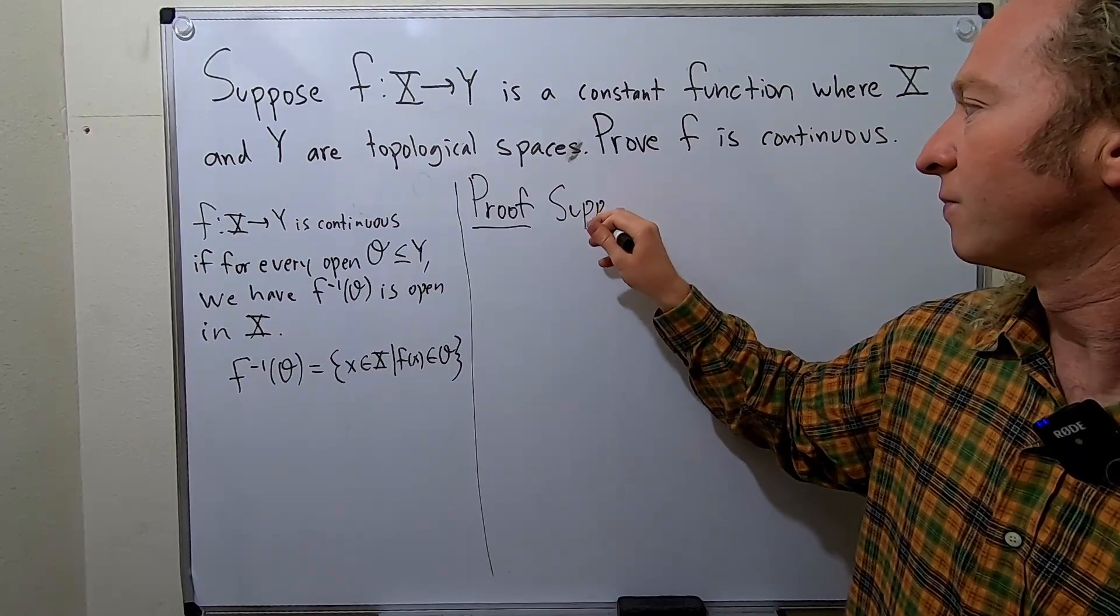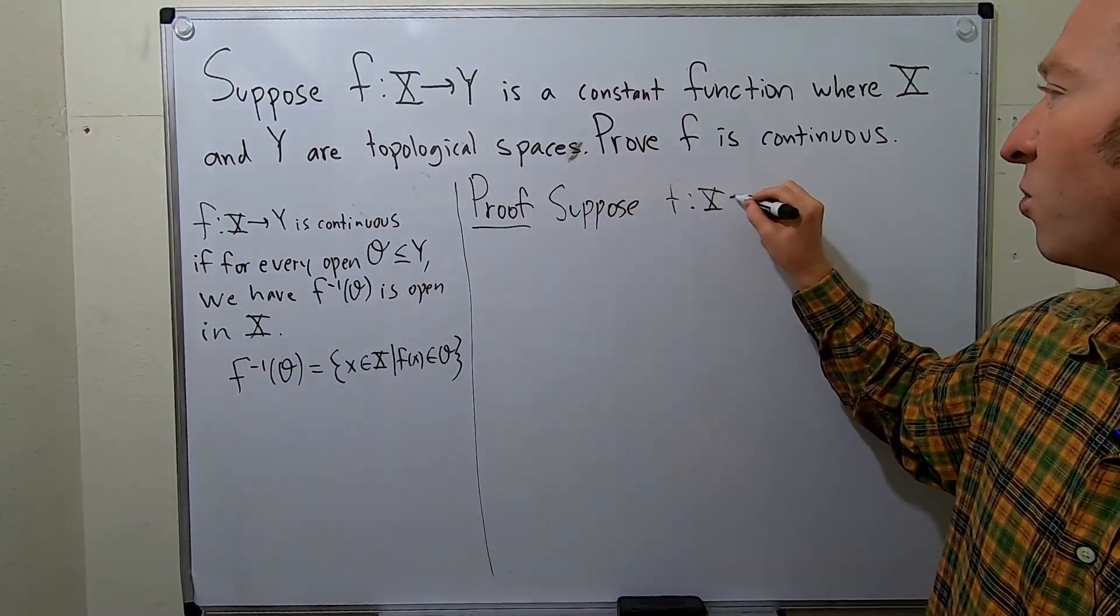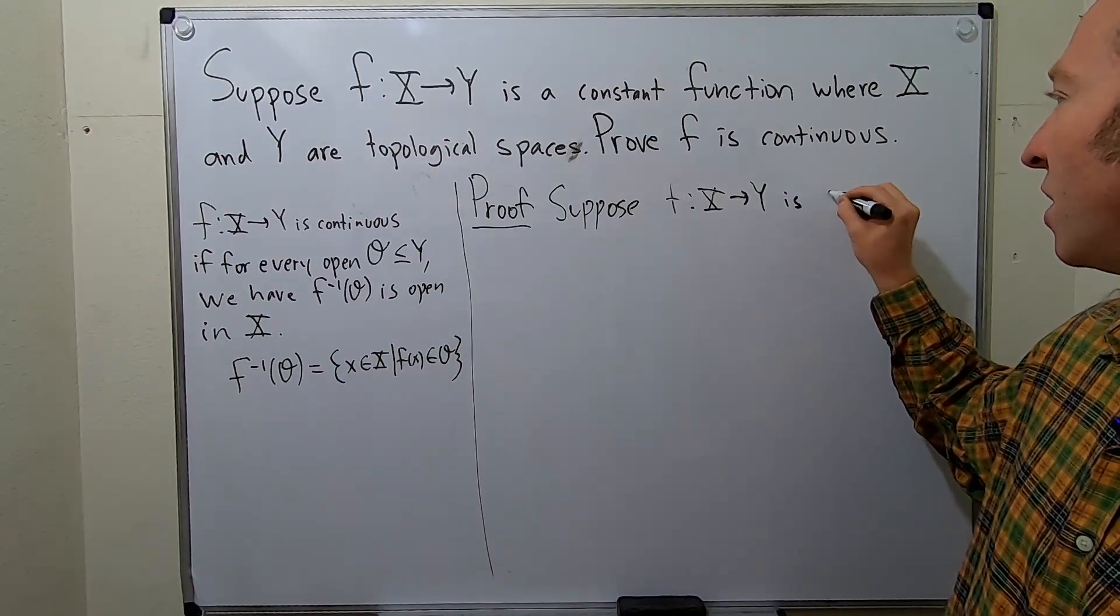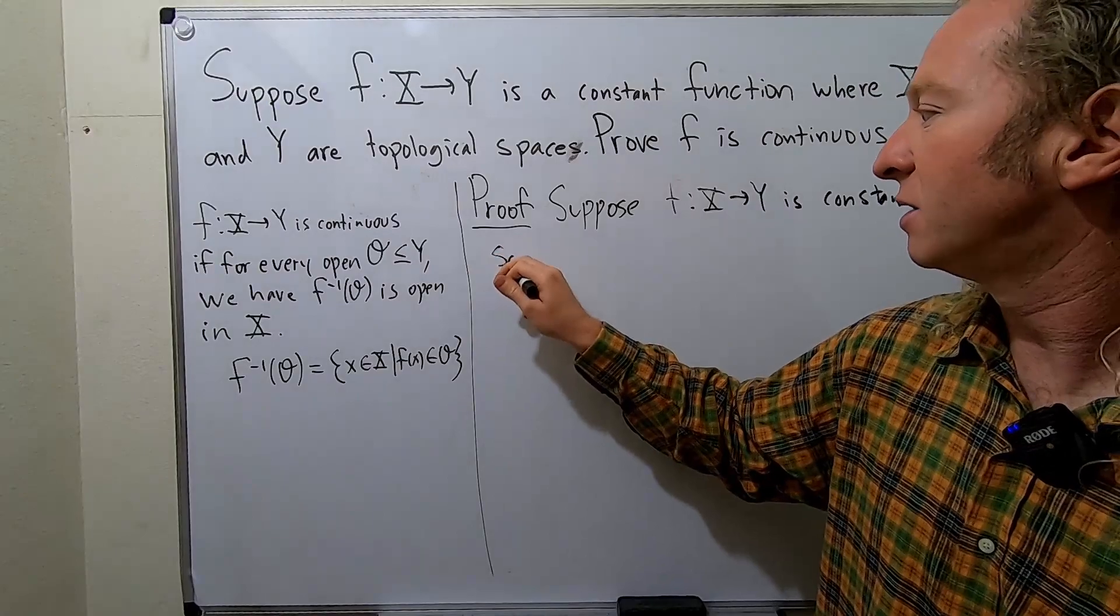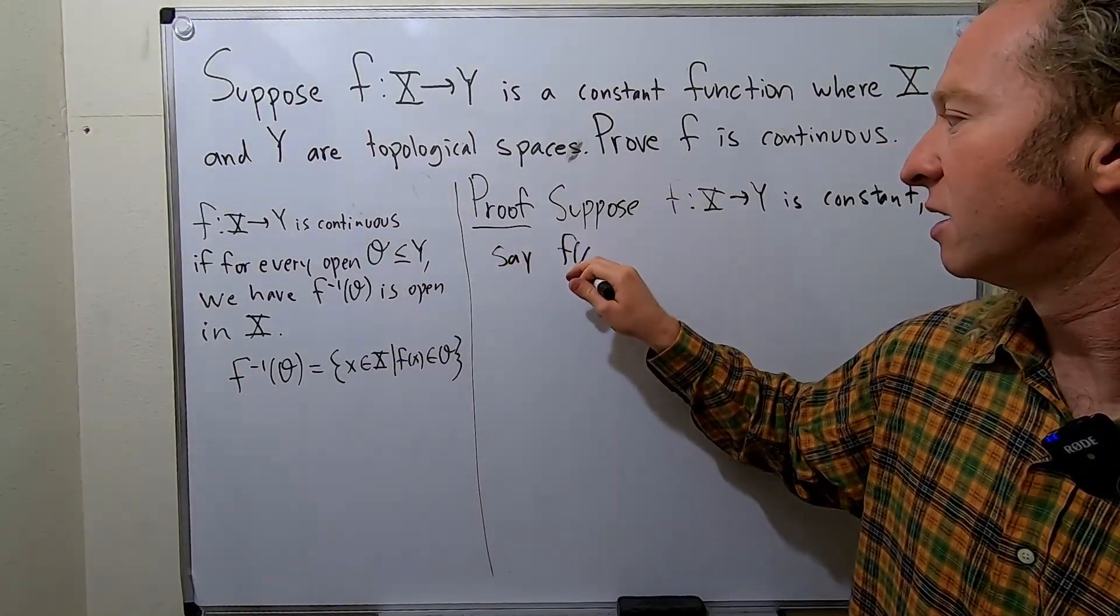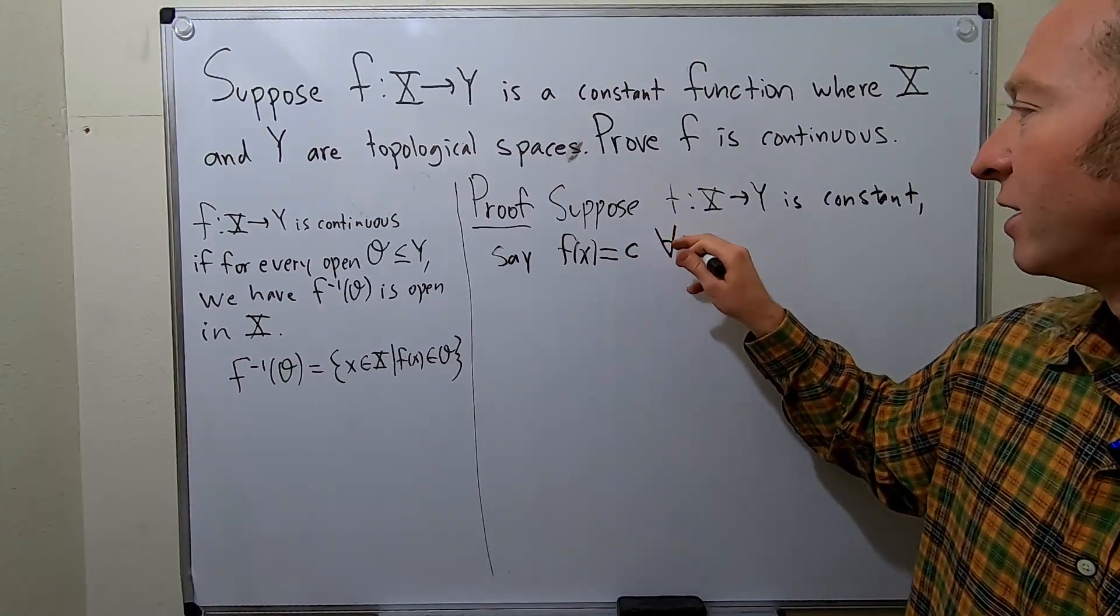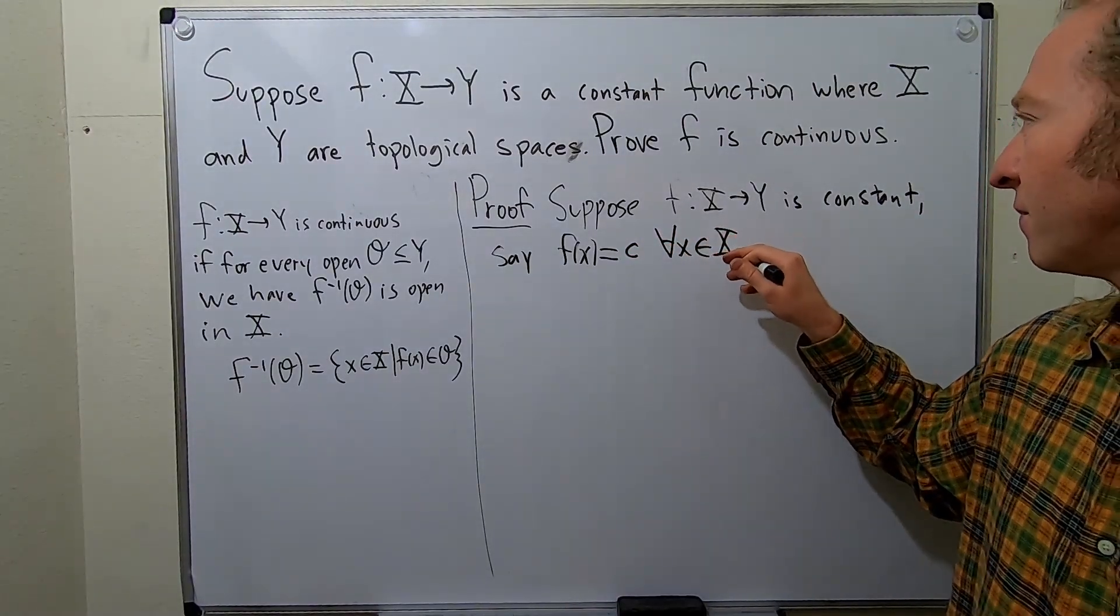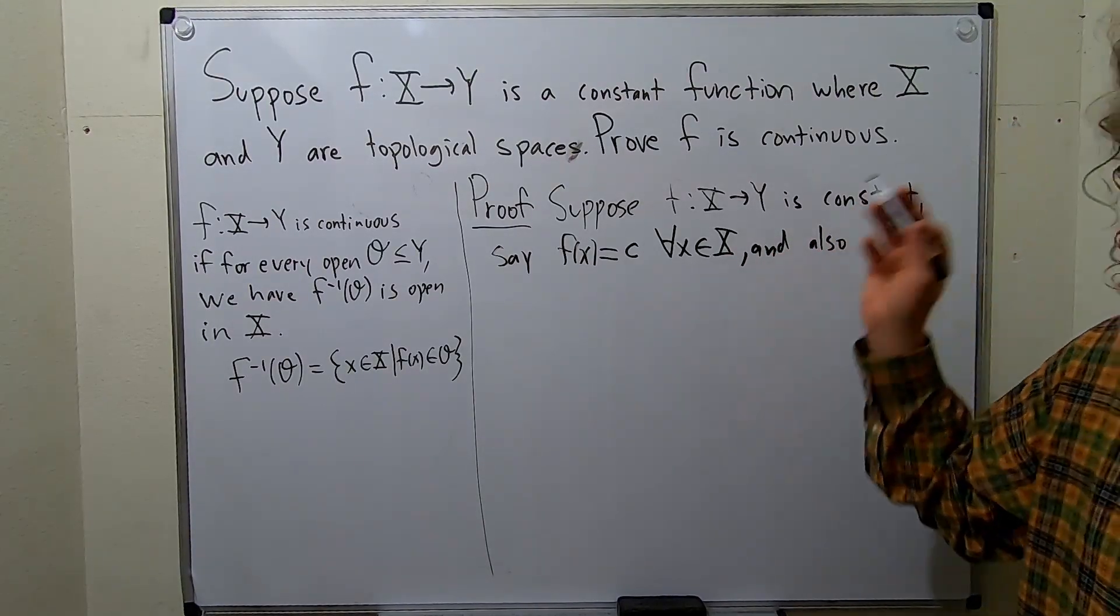So suppose that f from x to y is constant, say, defined by f of x equal to c. And this will be for all x in capital X. And also assume x and y are topological spaces.